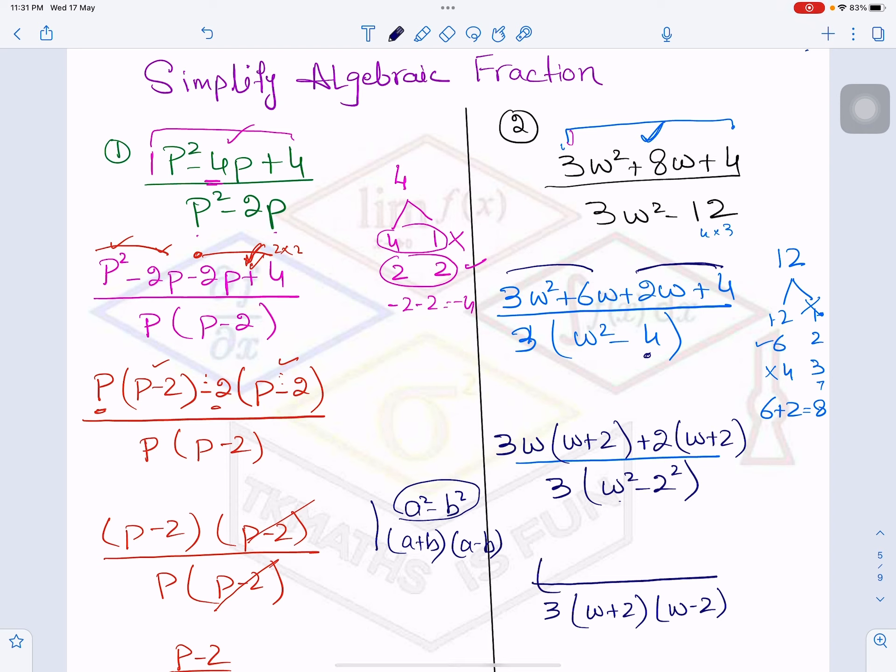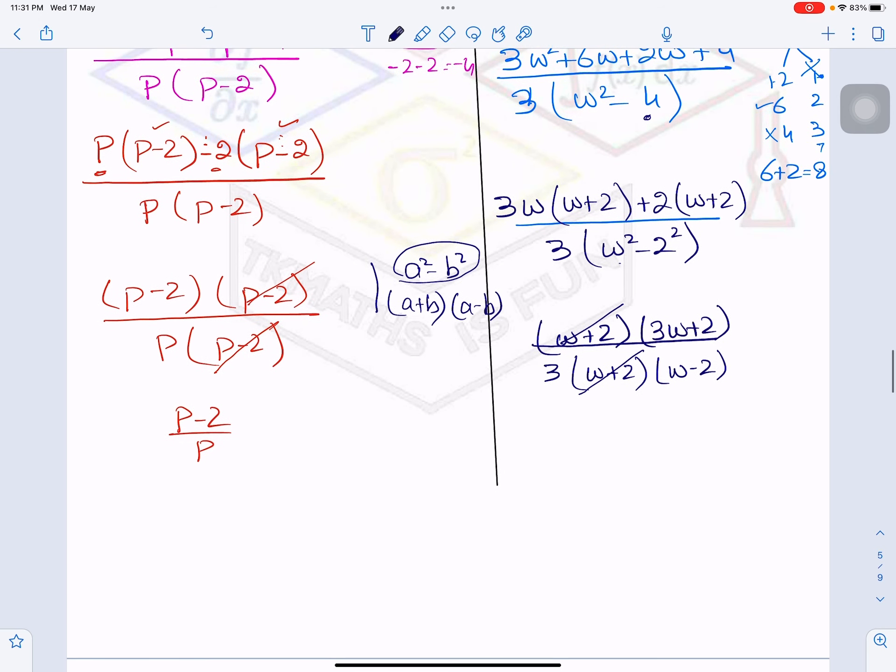And from the numerator I have W+2 common and 3W+2. So now W+2 can cancel out. So what is left behind? (3W+2) divided by 3(W-2). So this is how you simplify algebraic fraction.